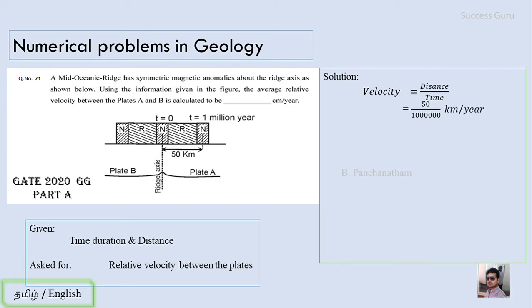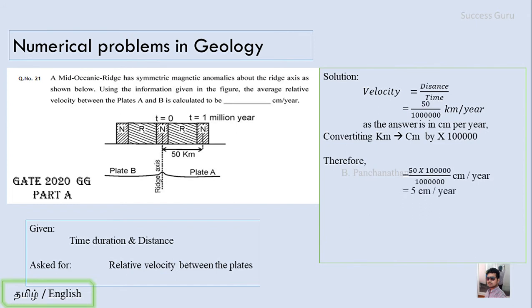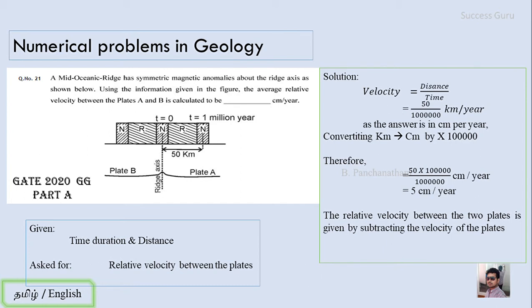The formula is velocity = distance / time. We need the answer in centimeter per year, so we convert 50 kilometers to centimeters by multiplying by 1 lakh (10^5), giving 5 centimeter per year for each plate. To find the relative velocity between the two plates, since the movement is in opposite directions, we subtract (which becomes addition due to minus × minus = plus), giving a final answer of 10 centimeters per year.